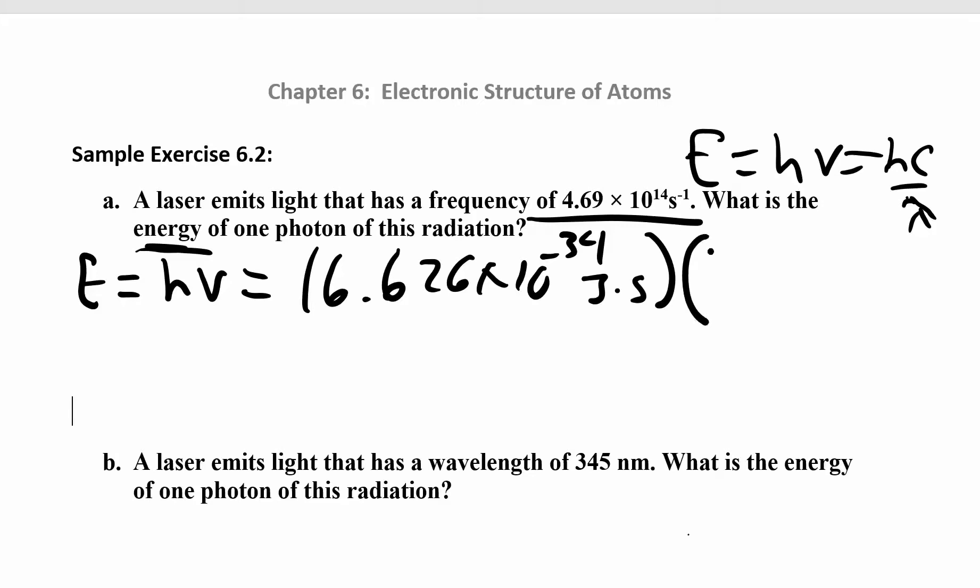And nu is our frequency. That's the 4.69 times 10 to the 14, 1 over seconds or seconds to the negative 1. So your seconds and seconds to the negative 1 are going to cancel. And your final answer is going to be in joules. And when you work that out, you get 3.11 times 10 to the negative 19 joules.